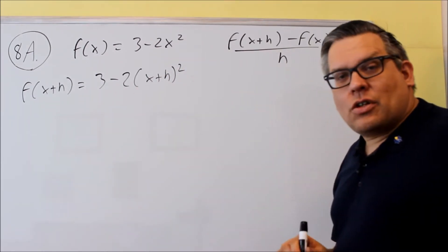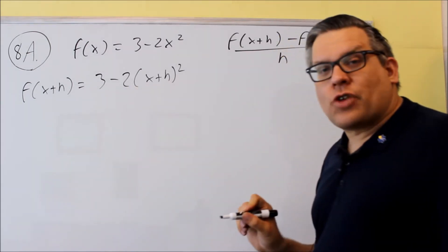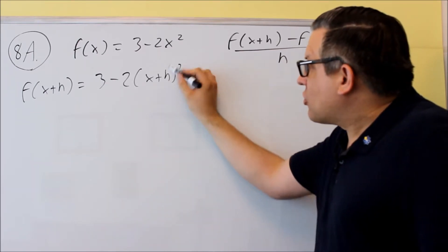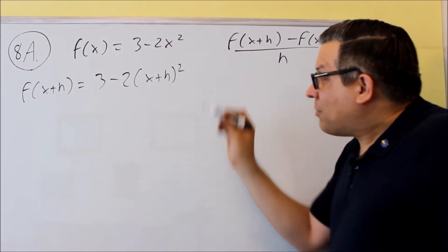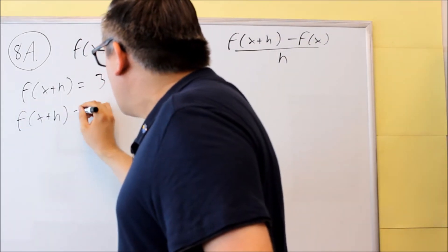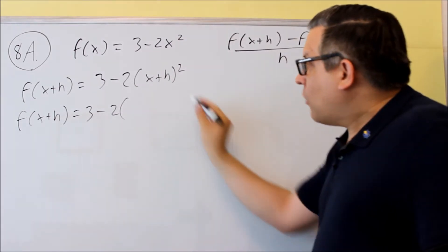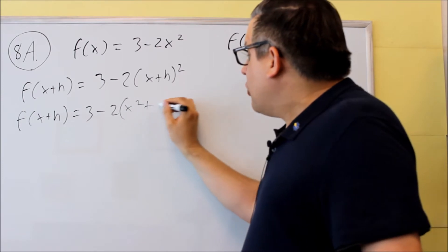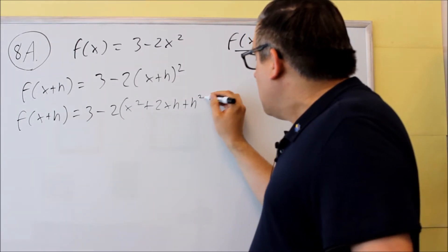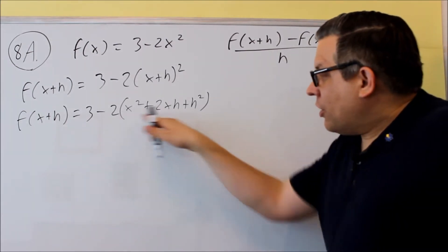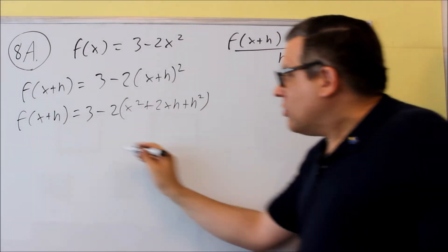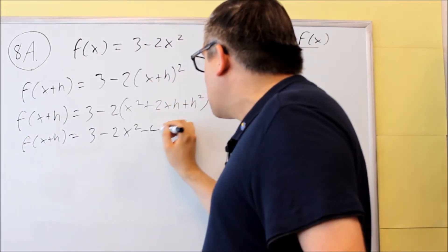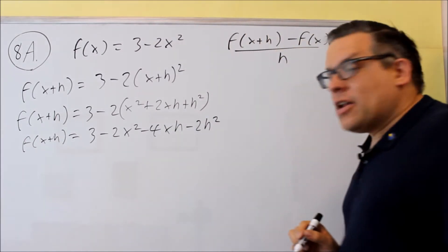Let's try and expand this as much as possible. Be careful you don't make the mistake of subtracting the 3 and 2 first — you can't do that because you've got to follow your order of operations. That means the square comes first. So we'll do the square first; we're going to leave the 2 alone and multiply x plus h by x plus h. If you multiply that out, you'll get x squared plus 2xh plus h squared. Then we'll multiply that by negative 2, so f of x plus h equals 3 minus 2x squared minus 4xh minus 2h squared.